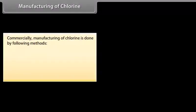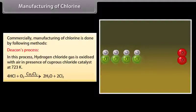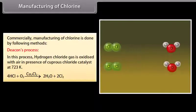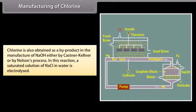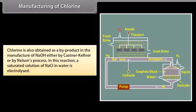Manufacturing of chlorine: Commercially, chlorine is manufactured by the following methods. In Deacon's process, hydrogen chloride gas is oxidized with air in the presence of cuprous chloride catalyst at 723 K. It is also manufactured by electrolysis of fused NaCl using lead as cathode and carbon as anode. Chlorine is also obtained as a by-product in the manufacture of NaOH either by the Castner-Kellner or Nelson's process, in which a saturated solution of NaCl in water is electrolyzed.